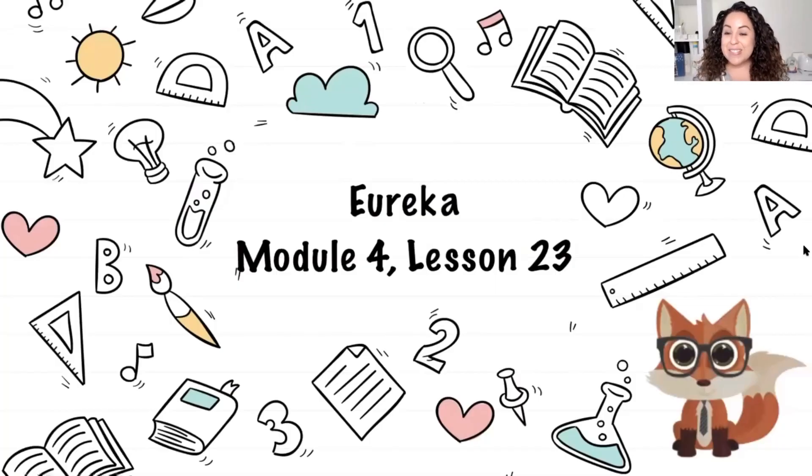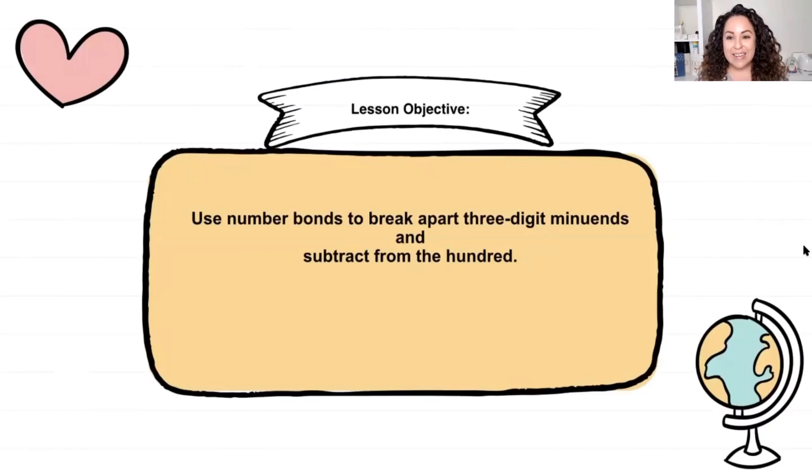Welcome back second graders. Today we're going to be working on Eureka module four lesson 23. Our objective today is we're going to use number bonds to break apart three digit minuends and subtract from the hundred. So what that means is we're going to be working with three digits and we're going to be decomposing them. Let's go ahead and get started.